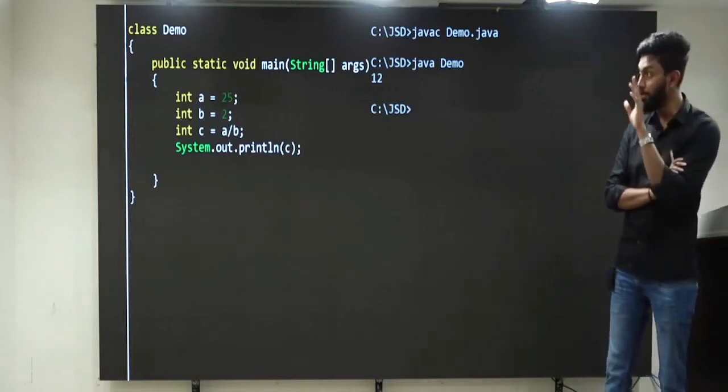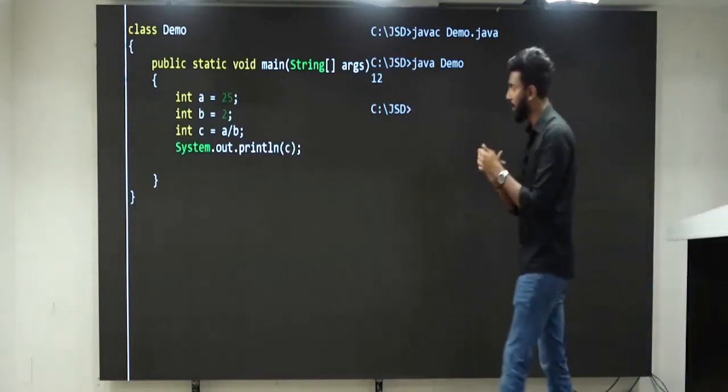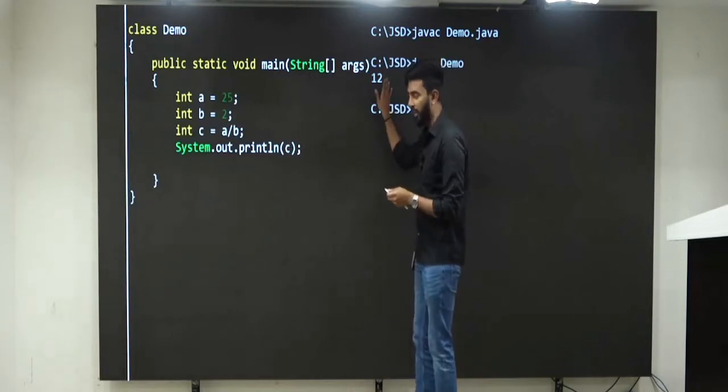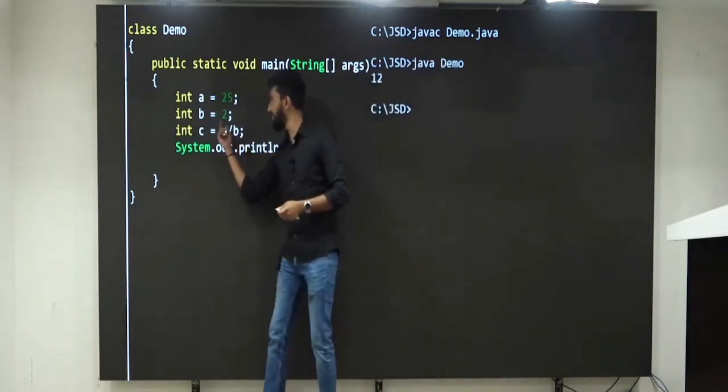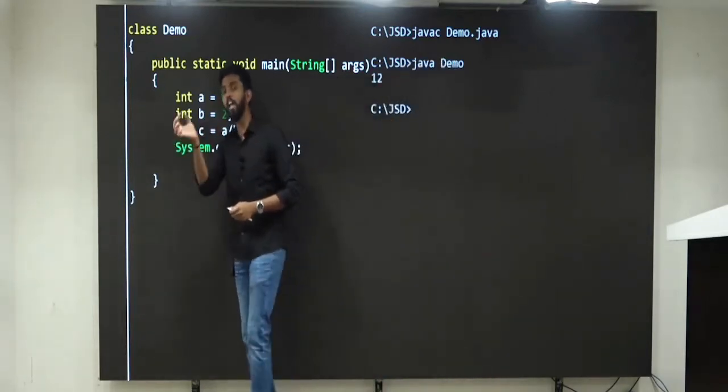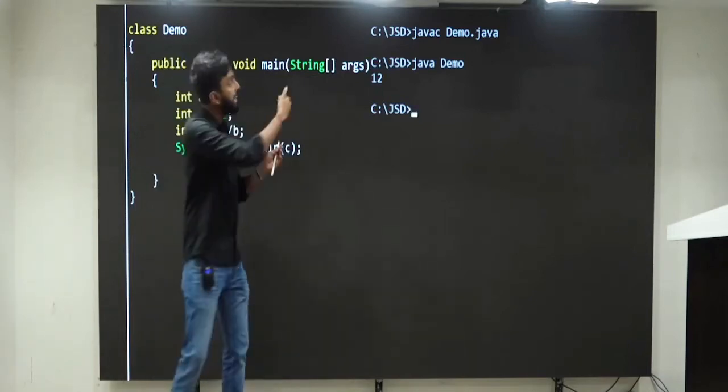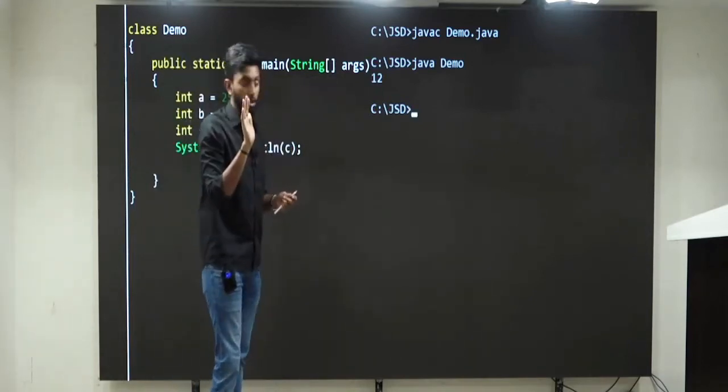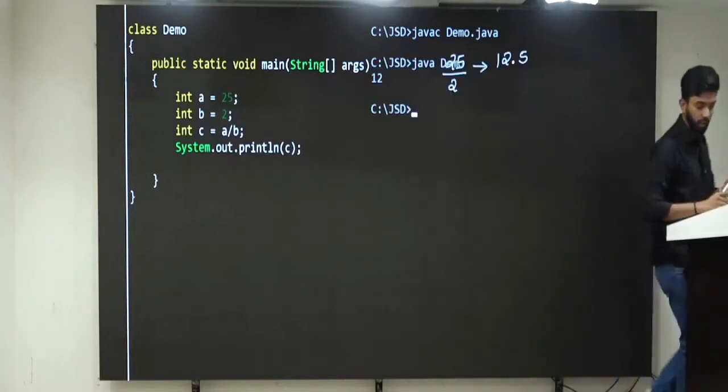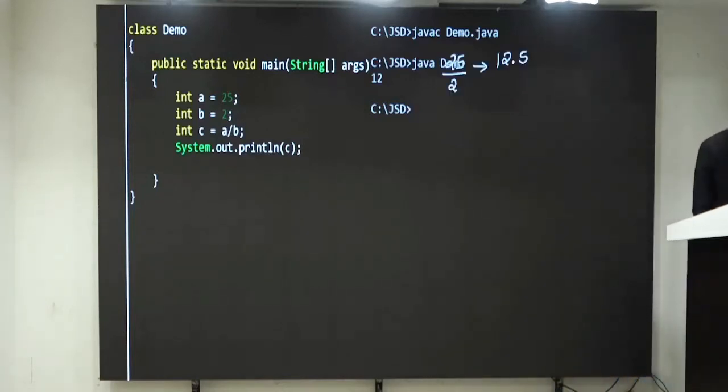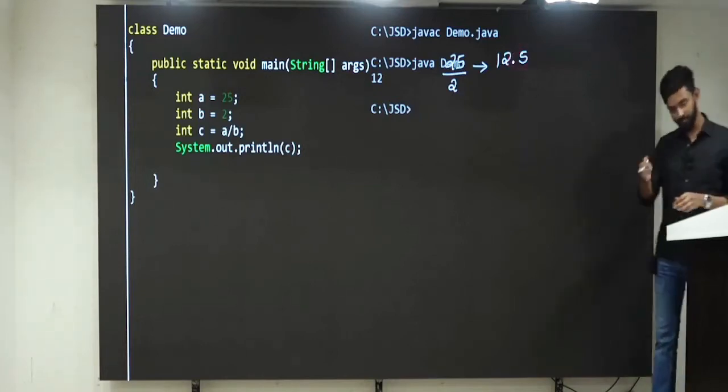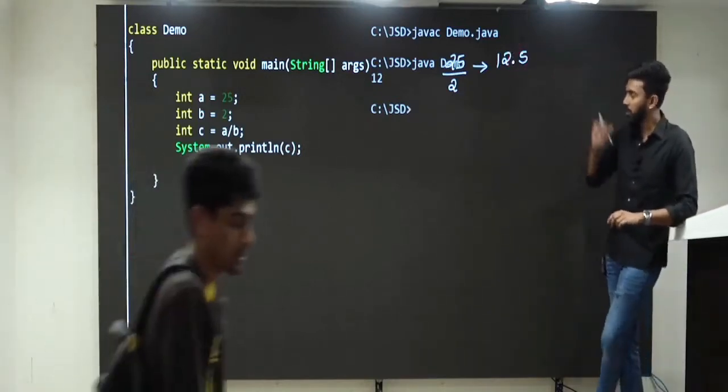Immediately some of you will be like sir, answer is 12.5, but you stored it inside int, and tell me can int store decimal part? No. So you are like sir, because integer cannot store decimal part, this 0.5 was lost, correct. 0.5 was lost.